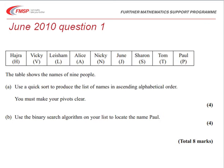The question gives us a list of names of 9 people and asks us to use a quicksort to produce the list of names in ascending alphabetical order. You must make your method clear by showing the pivots that are used. In part B of the question we're asked to use a binary search algorithm on the list to locate the name Paul.